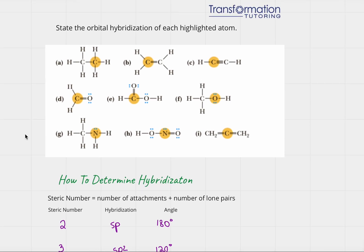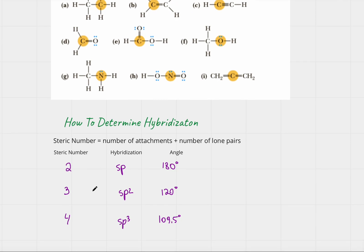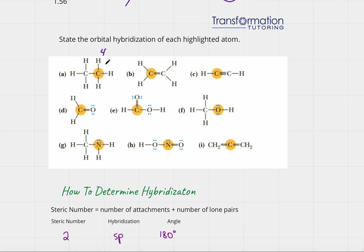Let's do part a. For this carbon, we have to figure out the steric number, which is the number of attachments. How many atoms is this carbon attached to? It's attached to one, two, three, four atoms, and it has zero lone pairs. So four plus zero equals four. When the steric number is four, the hybridization is sp3, so this carbon must be sp3 hybridized.